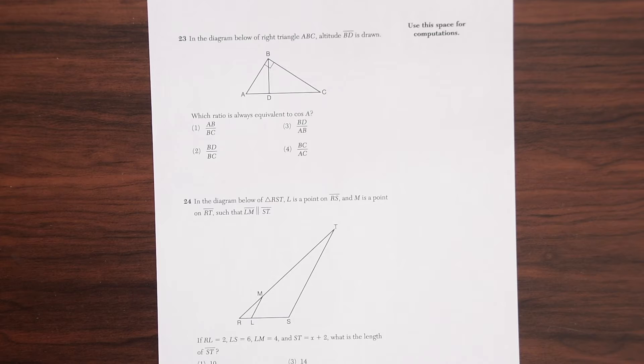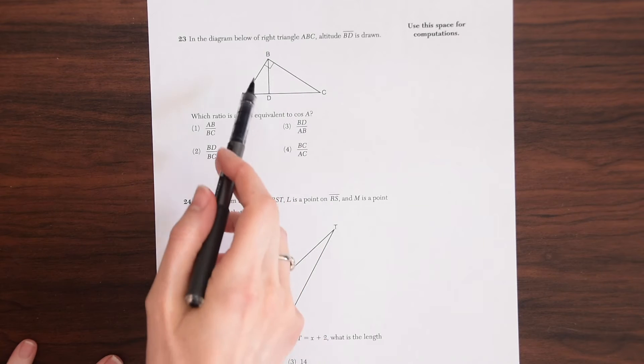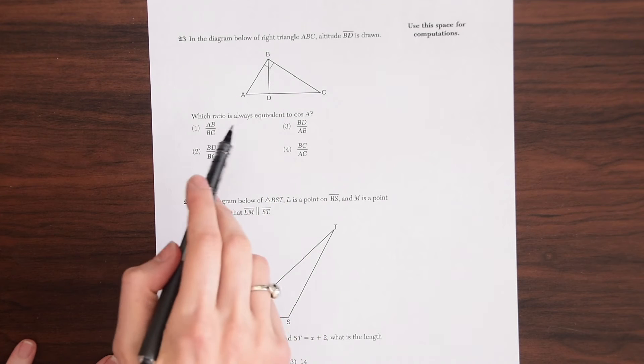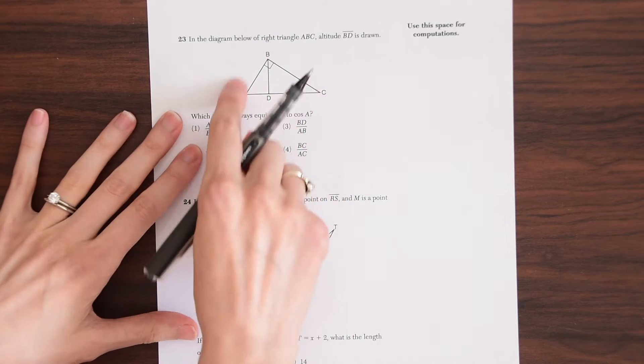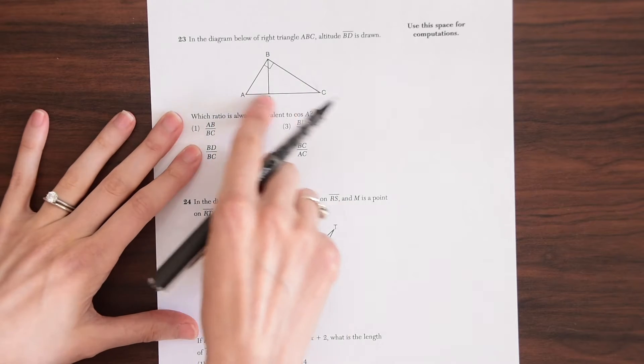In the diagram below of right triangle ABC, altitude BD is drawn. Which ratio is always equivalent to cosine of A? So let's first look at our triangle here. So we have triangle ABC.